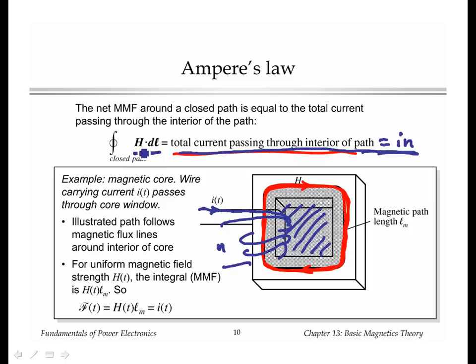If H is uniform or constant going all the way around the core, then H dot DL turns out to simply be H times the distance around the core, what's called the magnetic path length Lm. So we get H times Lm is equal to the total current in the middle of the core, and H is related to I.